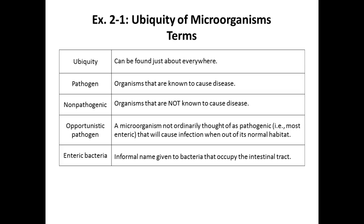E. coli can be pathogenic depending on where it is. Little girls are taught to wipe from front to back after using the bathroom, because wiping the wrong way can pass gut organisms into the vagina and urethra. A little girl in Louisiana died because organisms from her gut reached her urethra, bladder, and upper ureters, destroying her kidneys — all from not wiping properly.